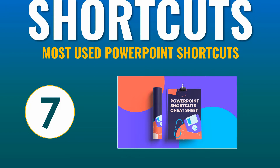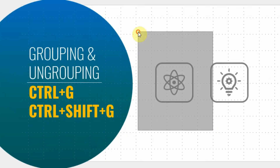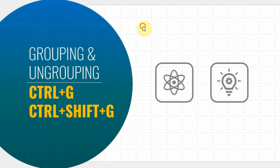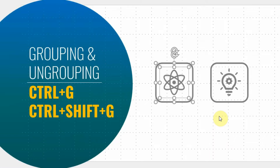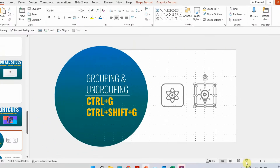Moving on to the last most asked question: the most used PowerPoint shortcuts to save time. I'll show you five shortcuts I use the most. First shortcut: group and ungroup. Select both elements and press Ctrl+G to group them. To ungroup, press Ctrl+Shift+G. Select both items, Ctrl+G to group, Ctrl+Shift+G to ungroup — a great shortcut you'll use every day.